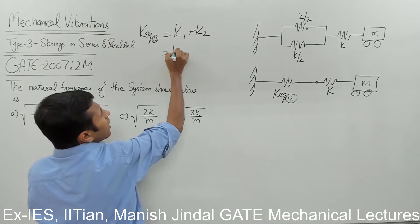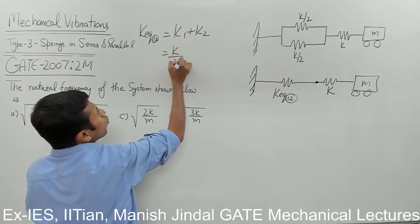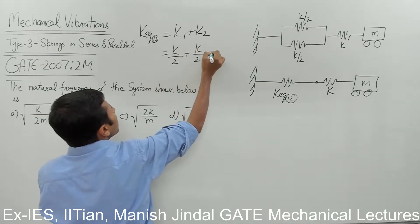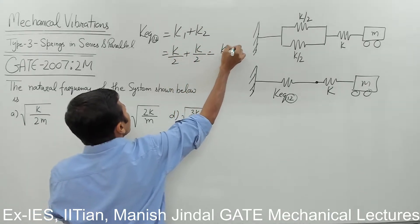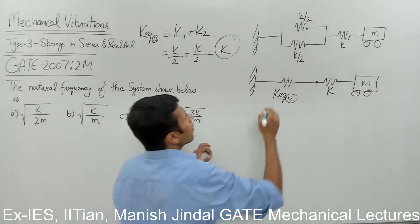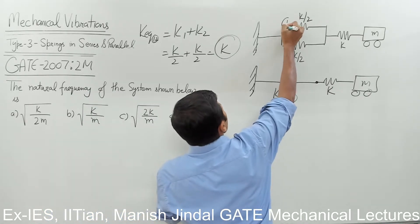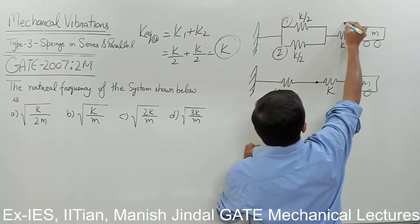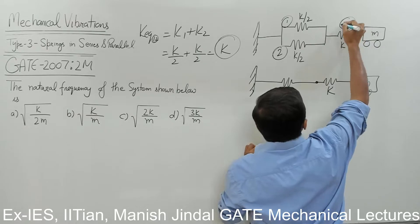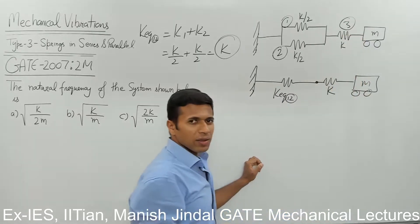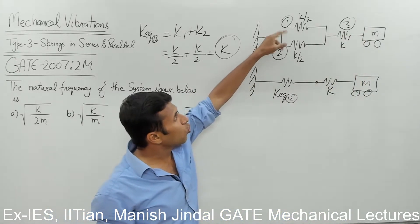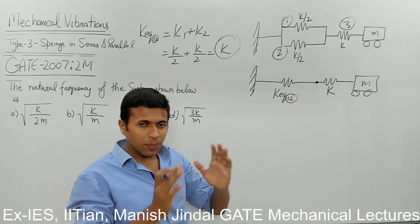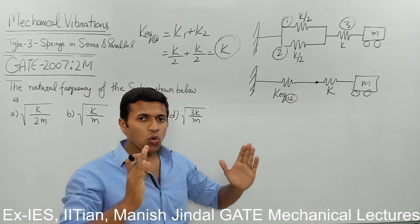So, k/2 plus k/2 is equal to k. This is my first spring, this is my second spring, and this is my third spring. So clearly these two springs are in parallel — because when they elongate, both will have equal elongation.